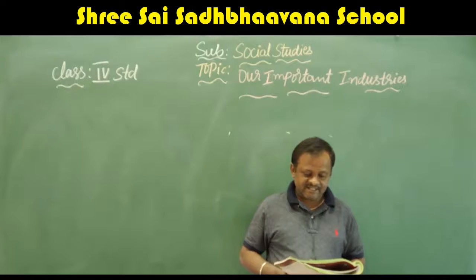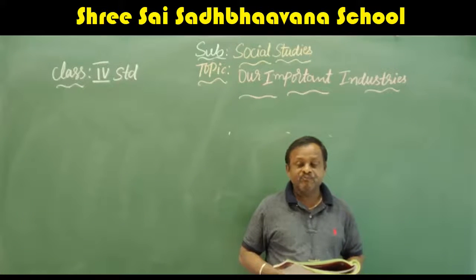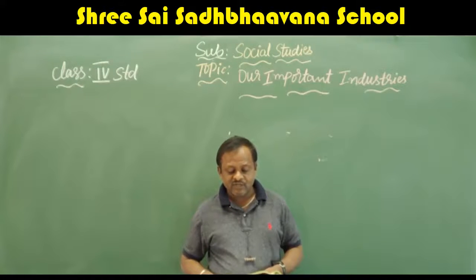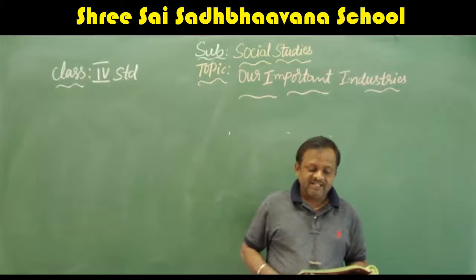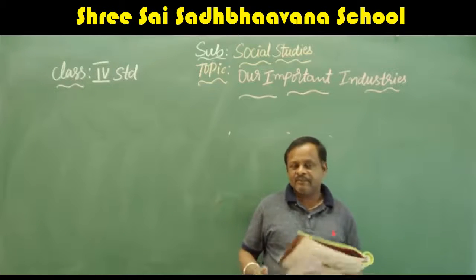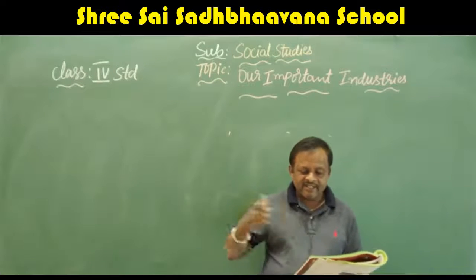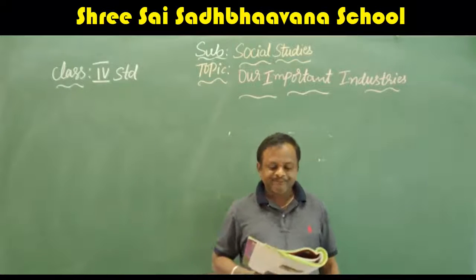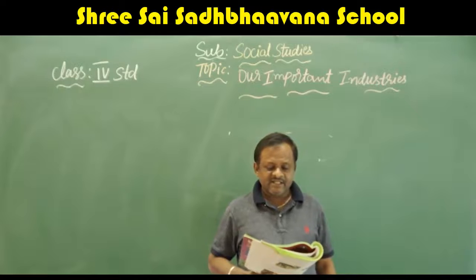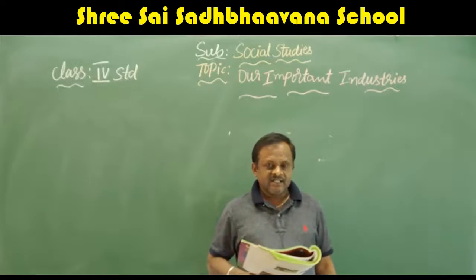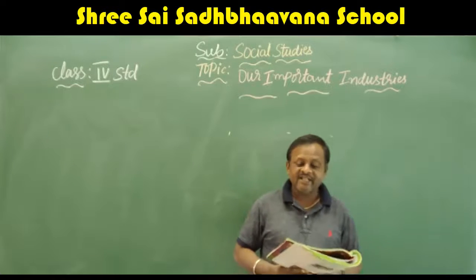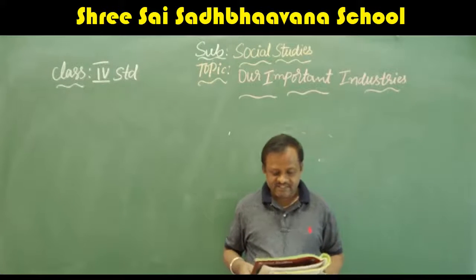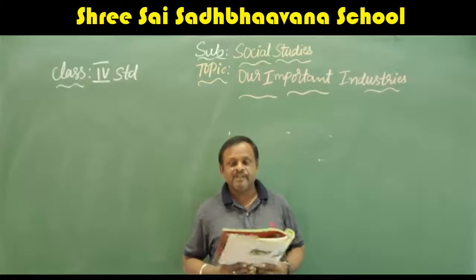Next, agro-based and mineral-based industries. Industries are also classified on the basis of raw materials they require. Industries that use cotton and sugarcane are agriculture-based industries. Industries that use minerals like bauxite, limestone, copper, etc. are mineral-based industries. So industries based on agriculture are called agro-based industries, and industries based on minerals are called mineral-based industries.